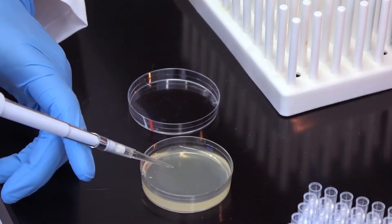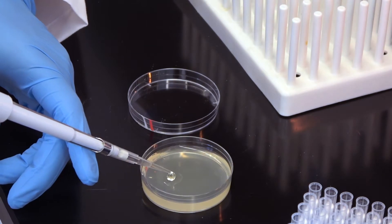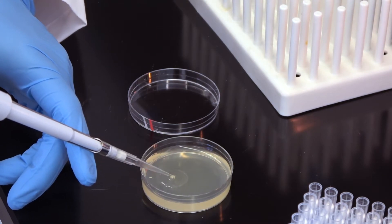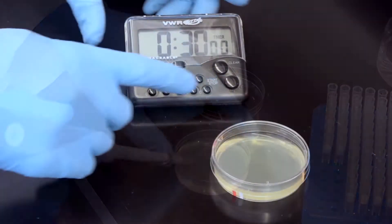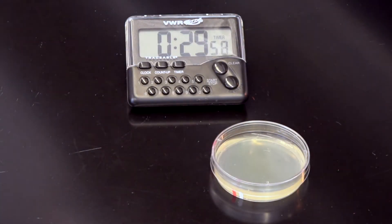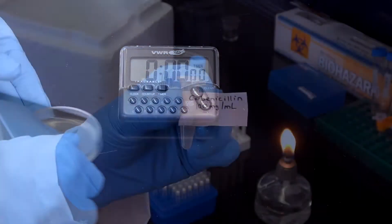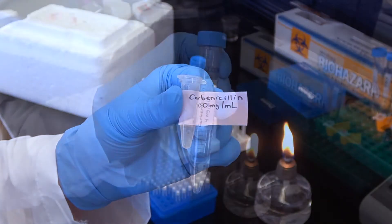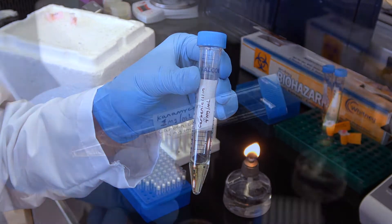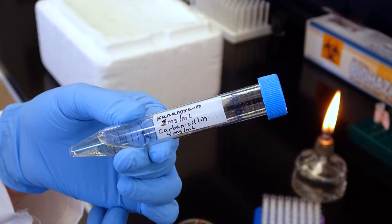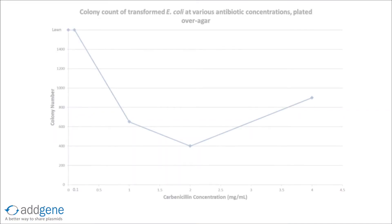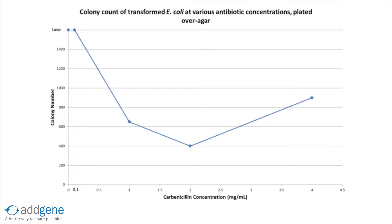In this method, we pipette the antibiotic we need onto a pre-poured LB agar plate, spread it, and let it sit so the antibiotic can diffuse throughout the plate. While we'll specifically focus on selection with carbonicillin in this video, this method can be adapted for any antibiotic once you've determined the optimum concentration via a selection curve. Please see our protocol page for a detailed description of how to make your own selection curve.